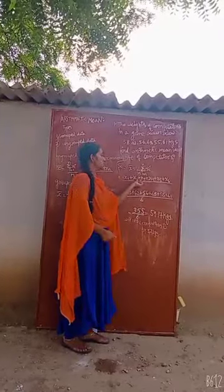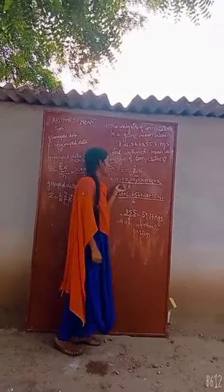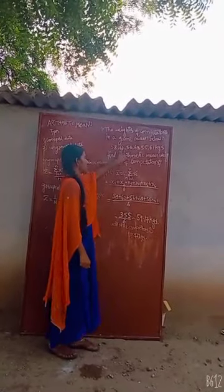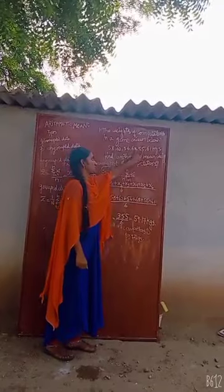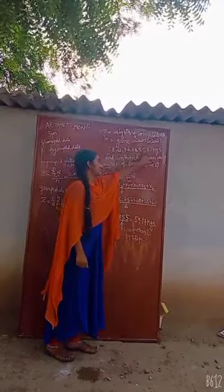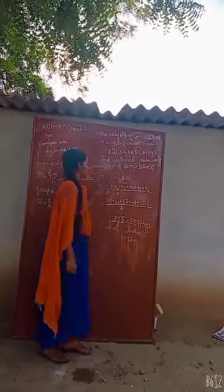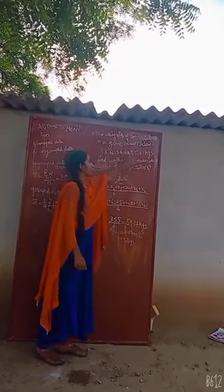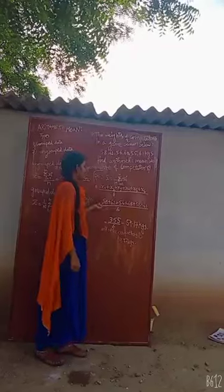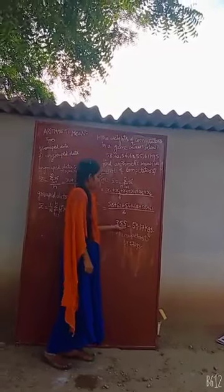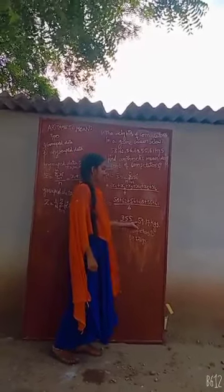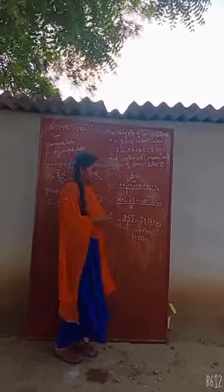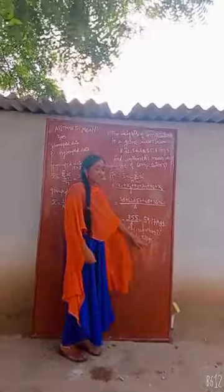x-bar equals x1 plus x2 plus x3 plus x4 plus x5 plus x6, divided by 6. Adding all these — there are 6 values — we get 355 divided by 6, which equals 59.17 kg. Therefore, the mean weight of the competitors is 59.17 kg.